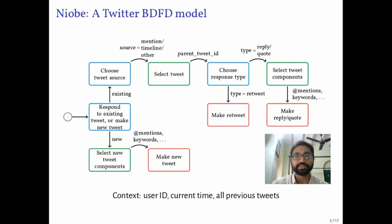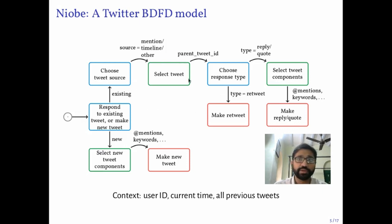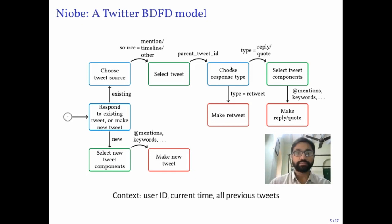Let's say the model decides to take the existing tweet path. The next decision is to decide how the user discovered the tweet — whether someone mentioned the user in it, or it appeared on the user's timeline. Features for this decision are derived from context and used to generate probabilities. The next decision is to select the tweet actually being responded to; here, the source selected in the previous decision gets added to the context. This decision is slightly different since the number of possible outcomes is variable, requiring a classifier that supports a variable number of output labels. Once the parent tweet has been chosen, the next task is to choose the response type, with the parent tweet ID appended to the context.